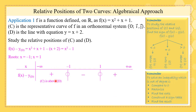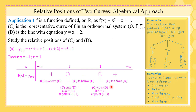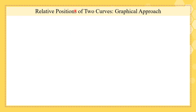From the sign table: C is above D, then C cuts D, then C is below D, then C cuts D again, and finally C is above D. It's enough to say that C cuts D at X equals negative 1. But if we want to find the point of intersection, we substitute X equals negative 1 into either the equation of the function or the equation of the line.